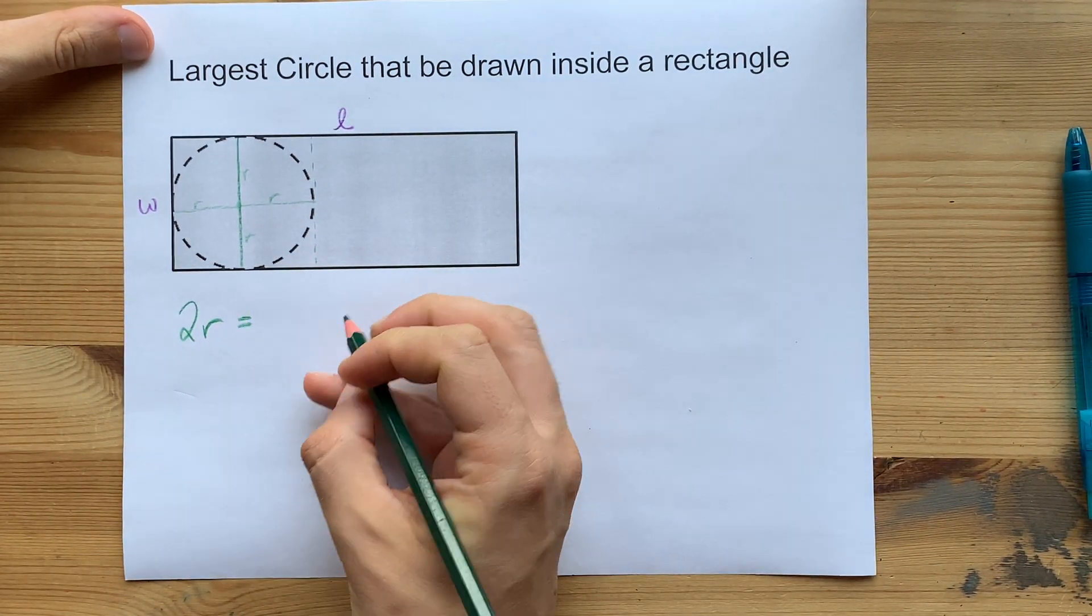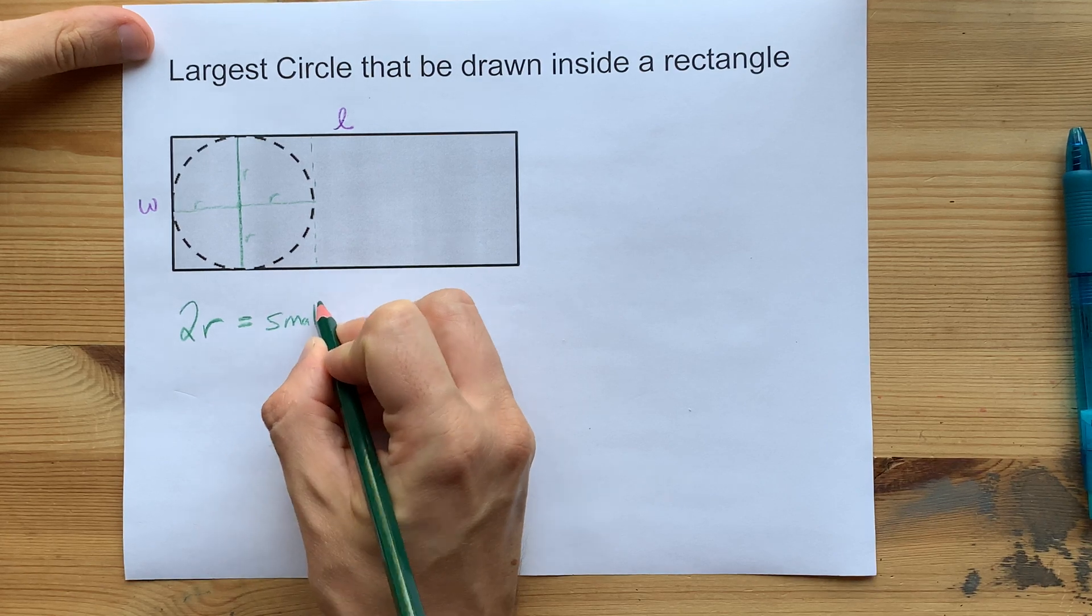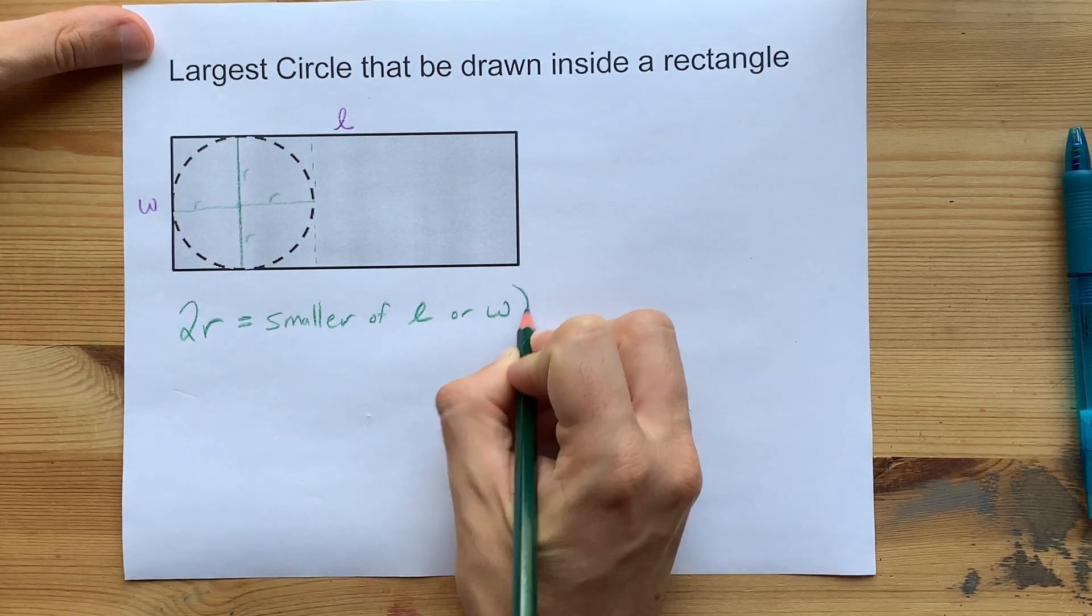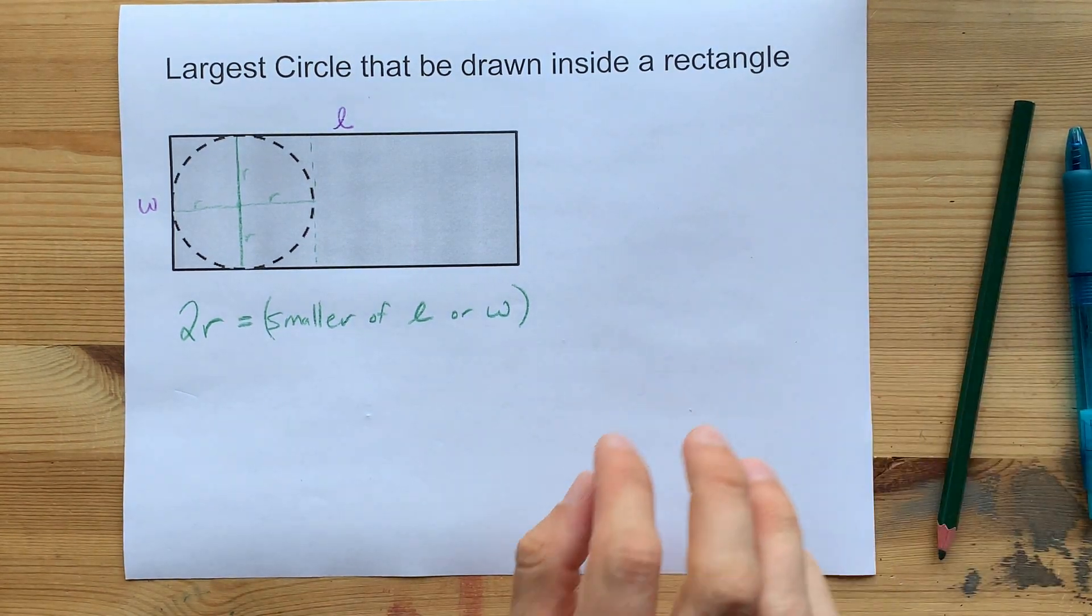2R equals whichever is the smaller of the length or the width for the rectangle. For example,